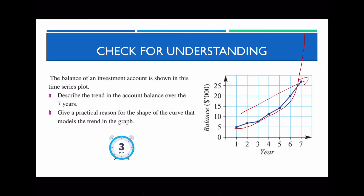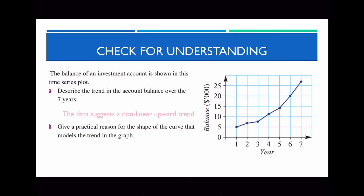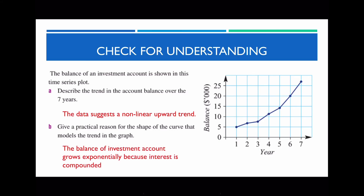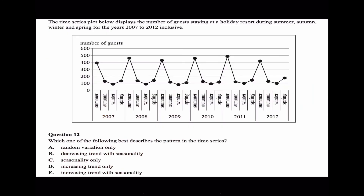The question reads: the balance of an investment account is shown in this time series plot. Describe the trend in the account over the seven years. We can see that the account increases over the years — there is an upward trend. This is also non-linear because it follows a curved shape, related to what we're studying in financial maths. For part B — give a practical reason for the shape of the curve — this is pretty much modeling compound interest and resembles an exponential graph. The balance of an investment account grows exponentially because interest is compounded.